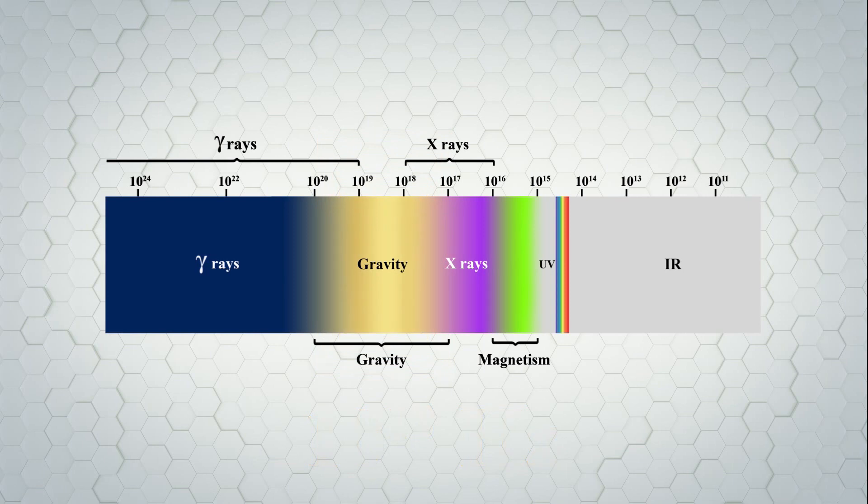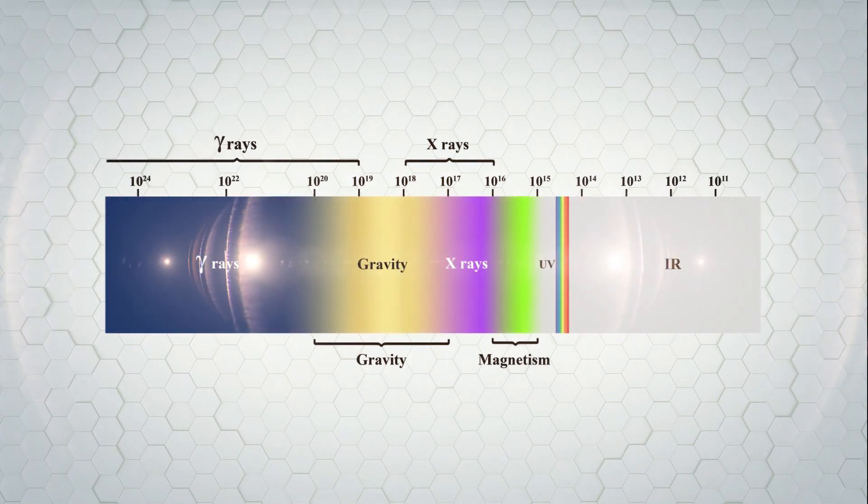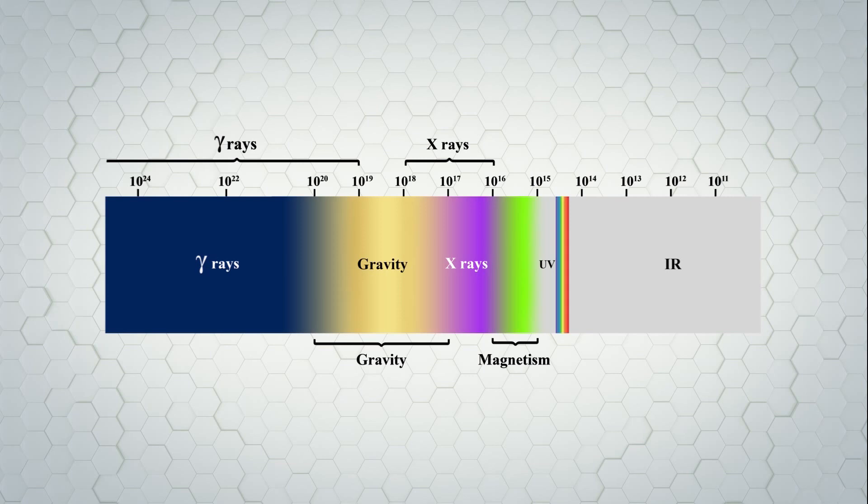Thus, a new electromagnetic spectrum diagram was presented with a new classification in which the magnetic waves are after visible and ultraviolet light. After that, there is the range of X-ray, then the gravitational waves, and finally the range of the gamma ray.